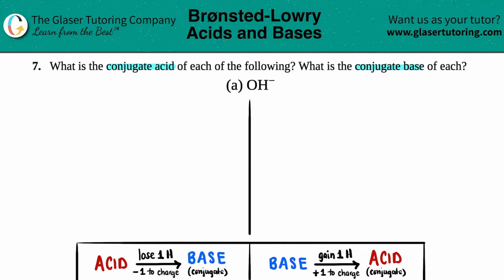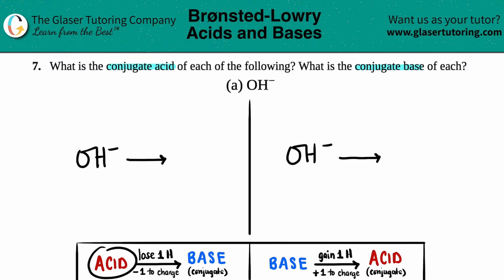We have OH⁻ on both sides. Let's follow these quick rules to find the conjugate acid and the conjugate base. We'll do the conjugate base part first.